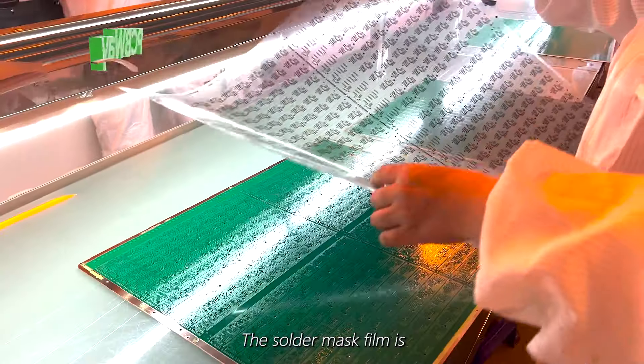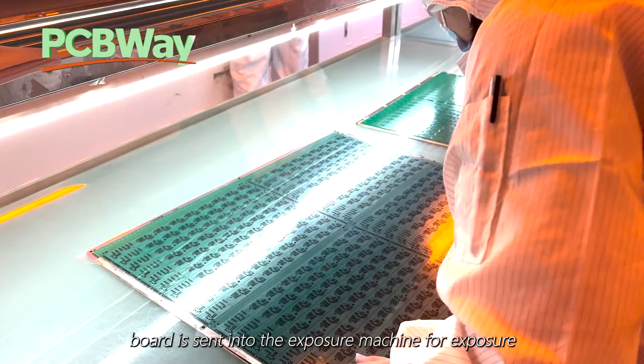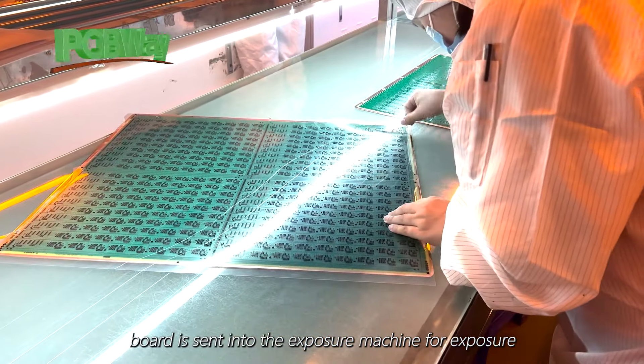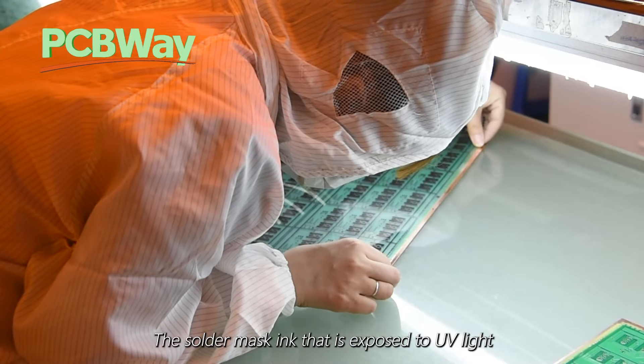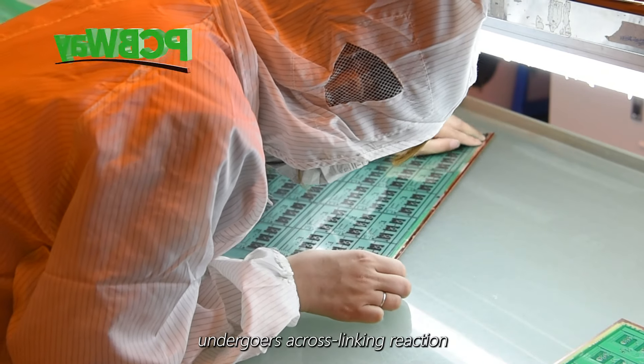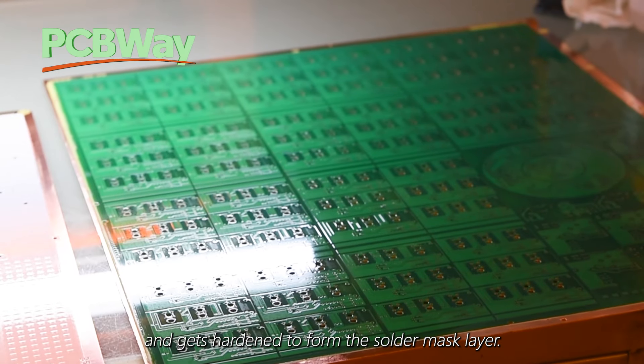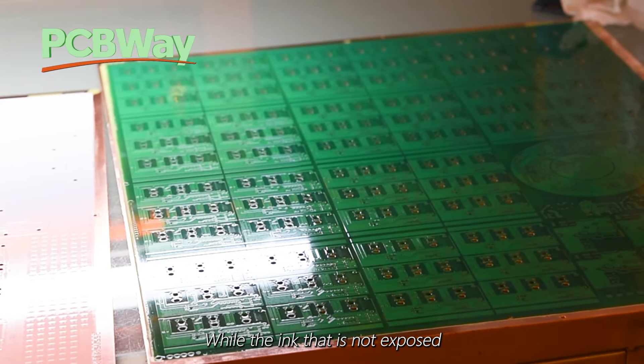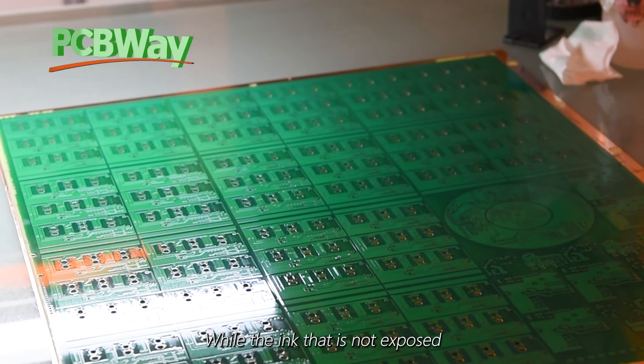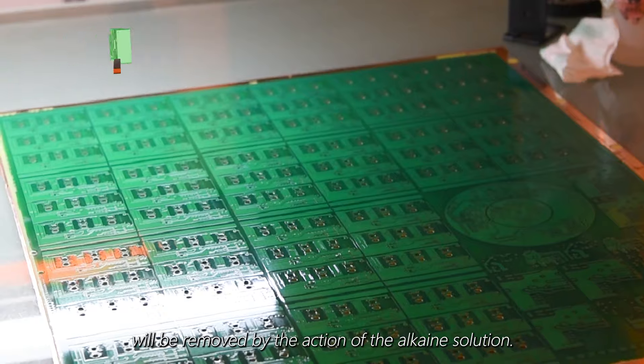The solder mask film is first aligned with the holes on the board and then the aligned board is sent into the exposure machine for exposure. The solder mask ink that is exposed to UV light undergoes a cross-linking reaction and gets hardened to form the solder mask layer, while the ink that is not exposed will be removed by the action of the alkaline solution.